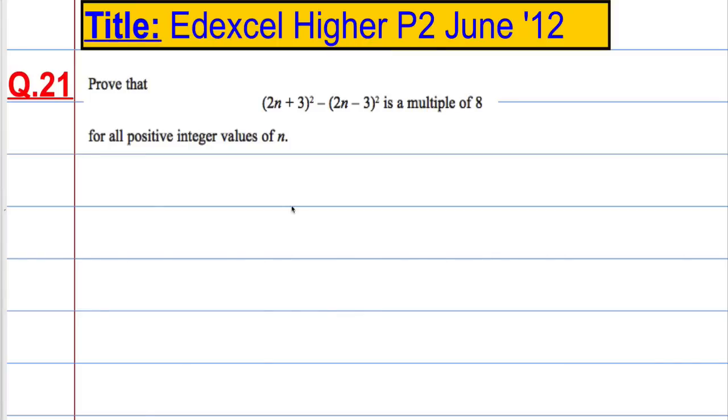So question 21, we're asked to prove that (2n+3)² minus (2n-3)² is a multiple of 8 for all positive integer values of n.